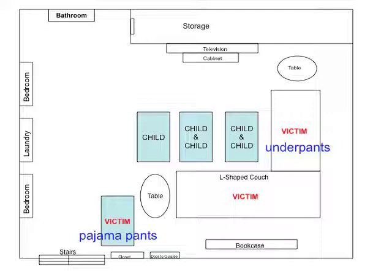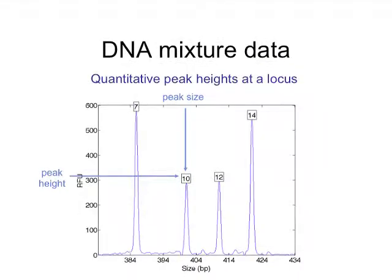He said he wasn't involved at all. Some of the pictures I'll show are related to evidence placed in an article of clothing. This is DNA mixture data. There are tall peaks — you see a 7 and a 14 — and then there are shorter peaks, like a 10 and a 12. The x-axis, or horizontal axis, corresponds to which of the different alleles it is, and the height corresponds to how much DNA is present.